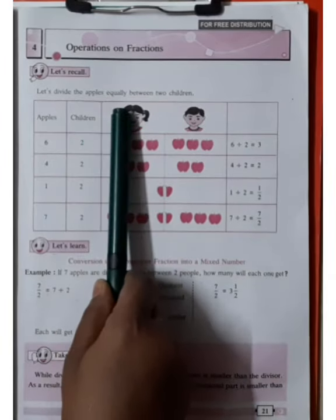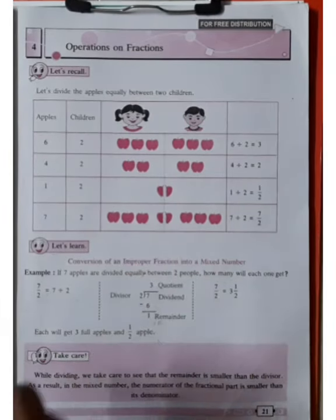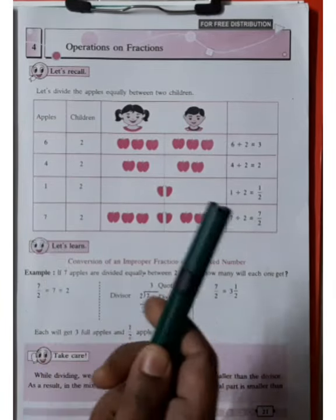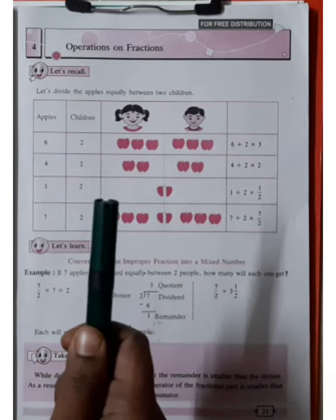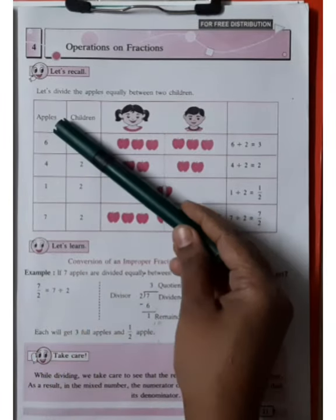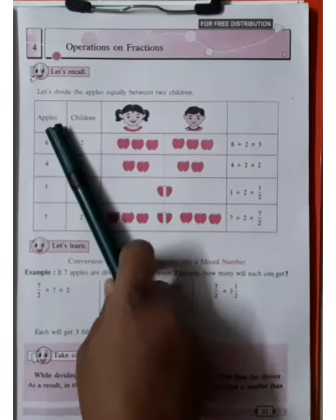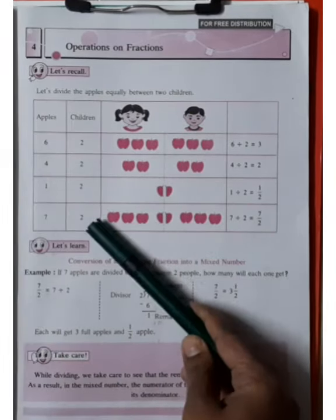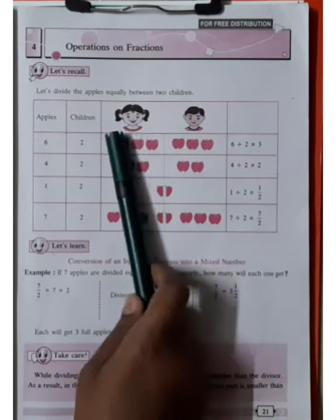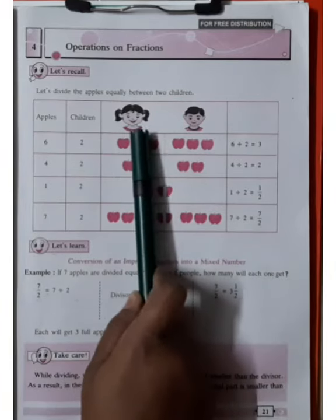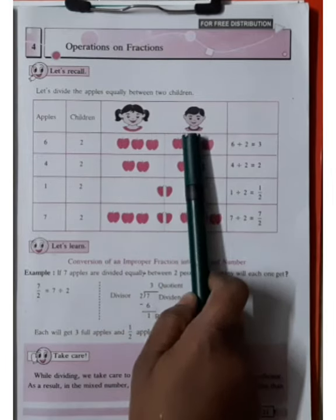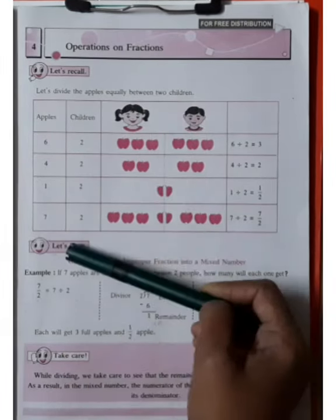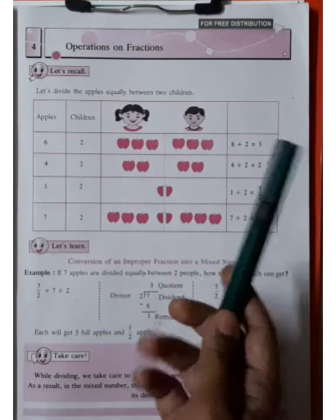Let's divide the apples equally between two children. Suppose some apples are divided equally between two children. For example, look at this: in the first column, number of apples; in the second column, number of children. Two children are given. So let's divide the apples equally between two children. Let's understand fractions.